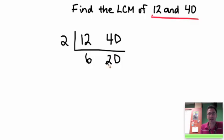I'm looking again for a common factor. They're both even still, so I'm sure that 2 will work again. 6 divided by 2 is 3, 20 divided by 2 is 10.